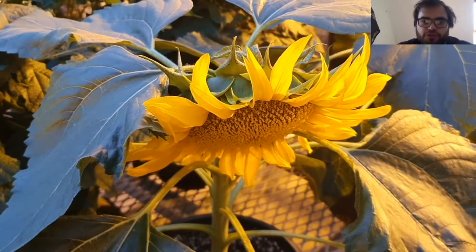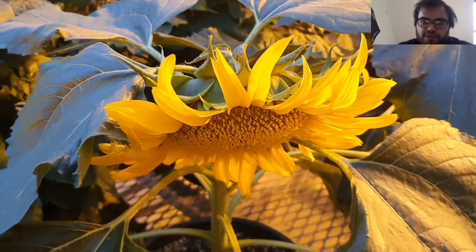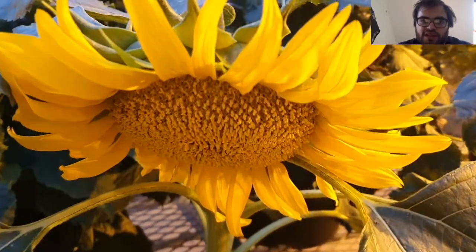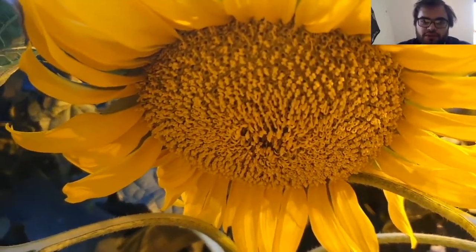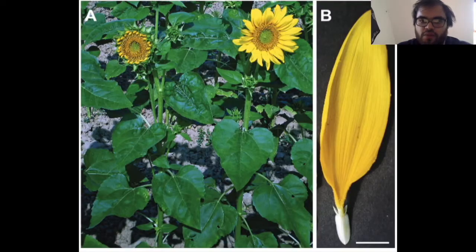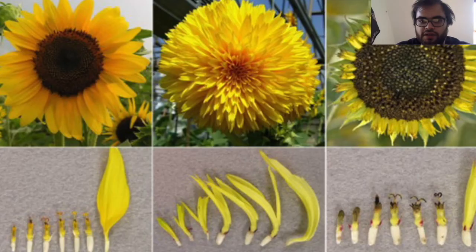Now we're going to show you a familiar plant — the sunflower. Most people think that a sunflower head is just one flower, but when we zoom in, we can see that a sunflower head is made up of many much smaller flowers. There are two types of flowers: ray flowers and disc flowers. Ray flowers have one very long petal, and each petal you see in the sunflower head is attached to a different ray flower. Disc flowers have very short petals and make up most of the sunflower head.